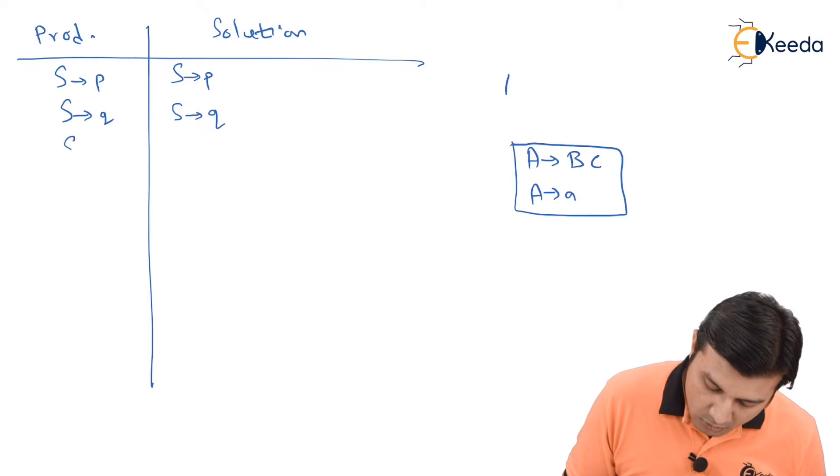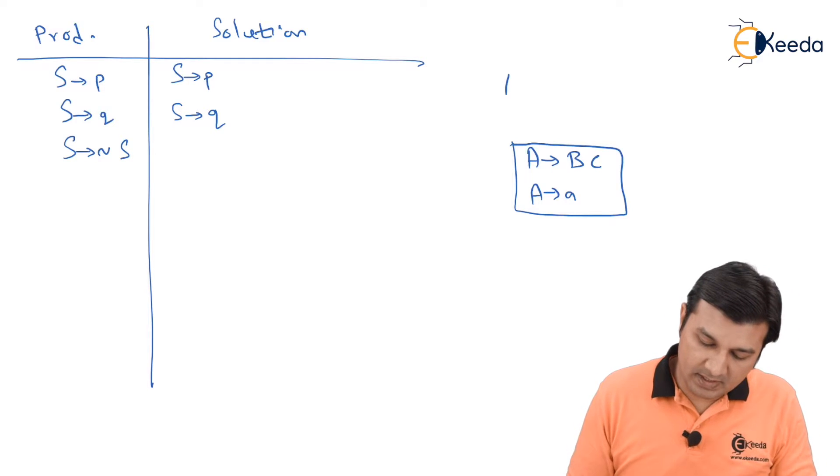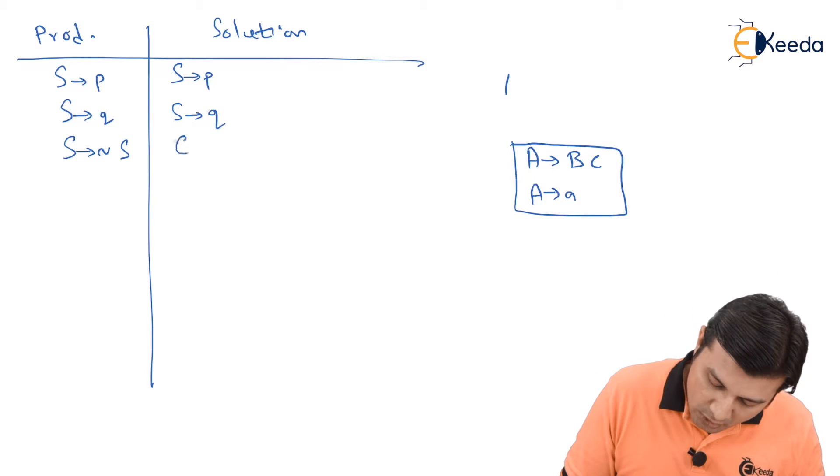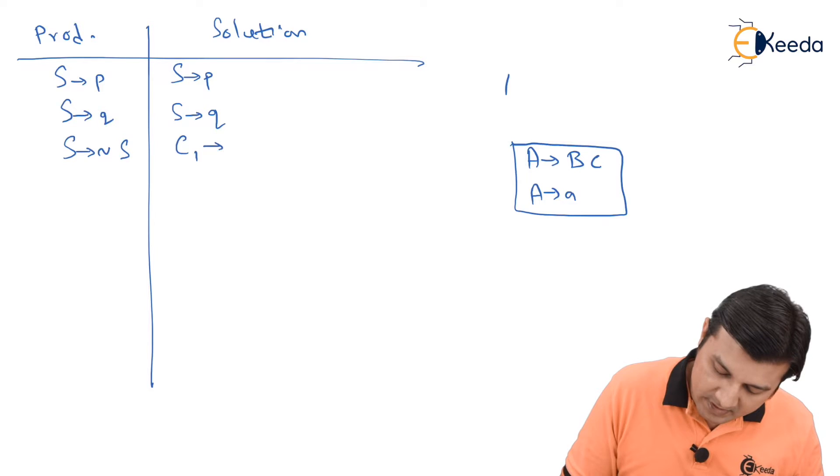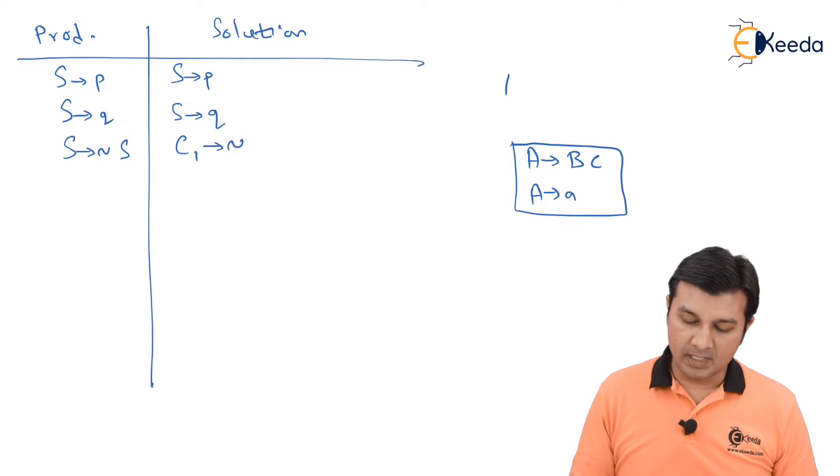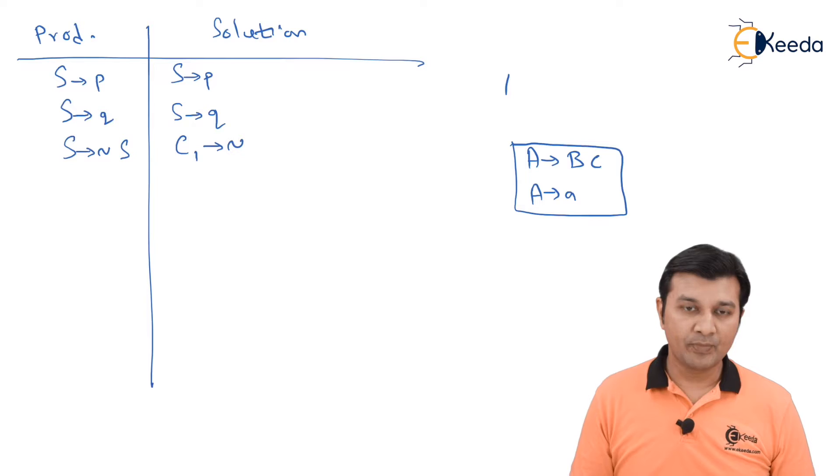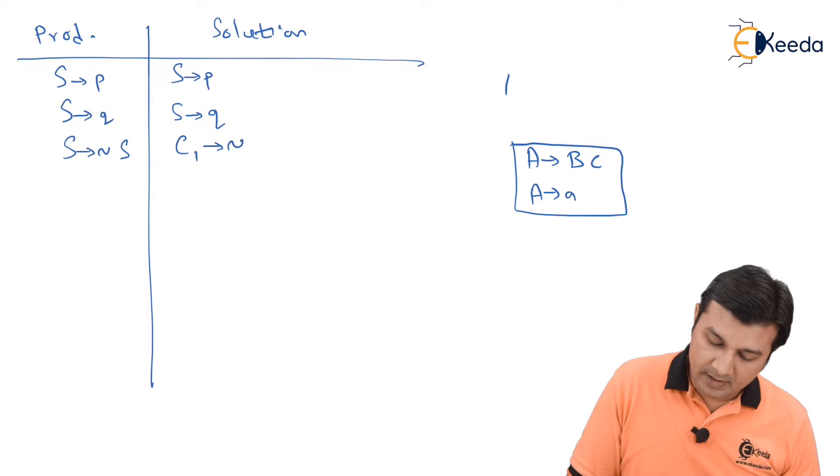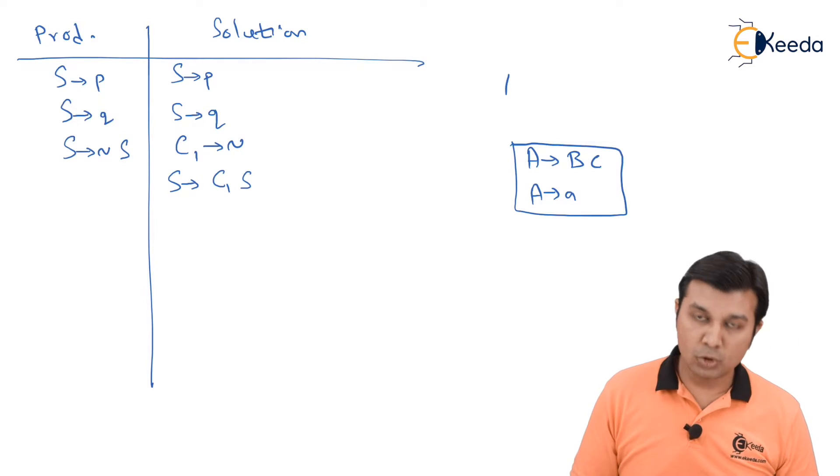S gives tilde S. So S is giving me tilde S and this is not in CNF. Can I say introduce a temporary variable C1 which is giving me this tilde and this tilde is nothing but a terminal. Therefore, I say C1 gives me tilde symbol is in CNF and now I can say S is giving me C1 S also in CNF.